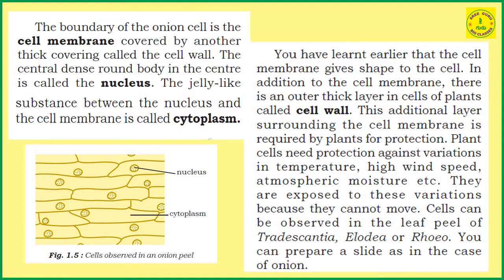You have learnt earlier that the cell membrane gives shape to the cell. In addition to the cell membrane, there is an outer thick layer in cells of plants called cell wall. This additional layer surrounding the cell membrane is required by plants for protection.